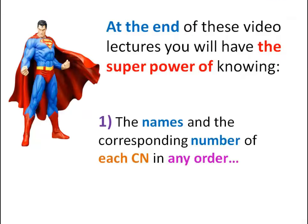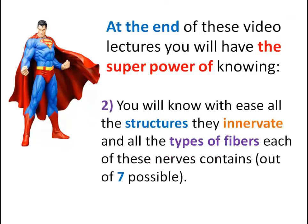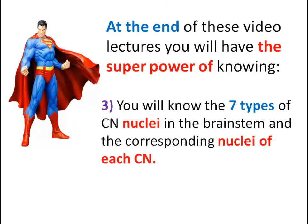At the end of these video lectures you will have the super power of knowing: one, the names and the corresponding number of each cranial nerve in any order; two, all the structures they innervate and all the types of fibers each of these nerves contains, out of seven possible; three, you will know the seven types of cranial nerve nuclei in the brainstem and the corresponding nuclei of each cranial nerve.